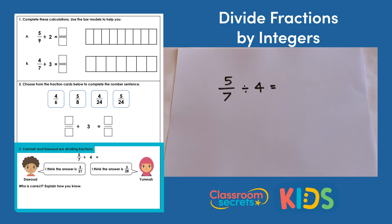Question 3 says Yumna and Dawood are dividing fractions and they're doing 5 sevenths divided by 4. And Dawood says I think the answer is 5 twenty-firsts. Yumna says I think the answer is 5 twenty-eighths. So who is correct and explain how we know? Well we can prove how we know it by carrying out the calculation.